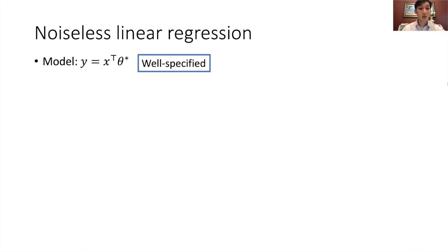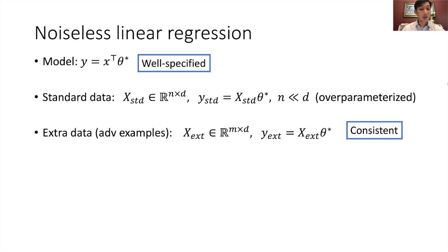So here's our noiseless linear regression setup. It assumes that the model, the true model, is linear in the features, with true parameters theta star, so that we're in the well-specified setting. The standard data, which is X standard and Y standard, consists of N examples in D dimensions, with D larger than N so that we're in the over-parameterized regime. The extra data, X extra, which are the adversarial examples, are labeled consistently with their true targets, Y extra.